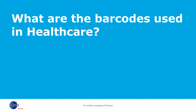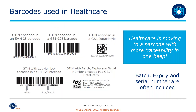I'd like to briefly speak about the different types of barcodes we see in healthcare. GTINs are encoded into barcodes to make them machine readable. On the top row of this slide we have three different types of standard GS1 barcodes, all with the same GTIN encoded. First is the EAN-13, most commonly seen in retail and point of sale, but it still may be seen across the healthcare supply chain. It is largely being replaced by the GS1-128 and the GS1 Data Matrix.